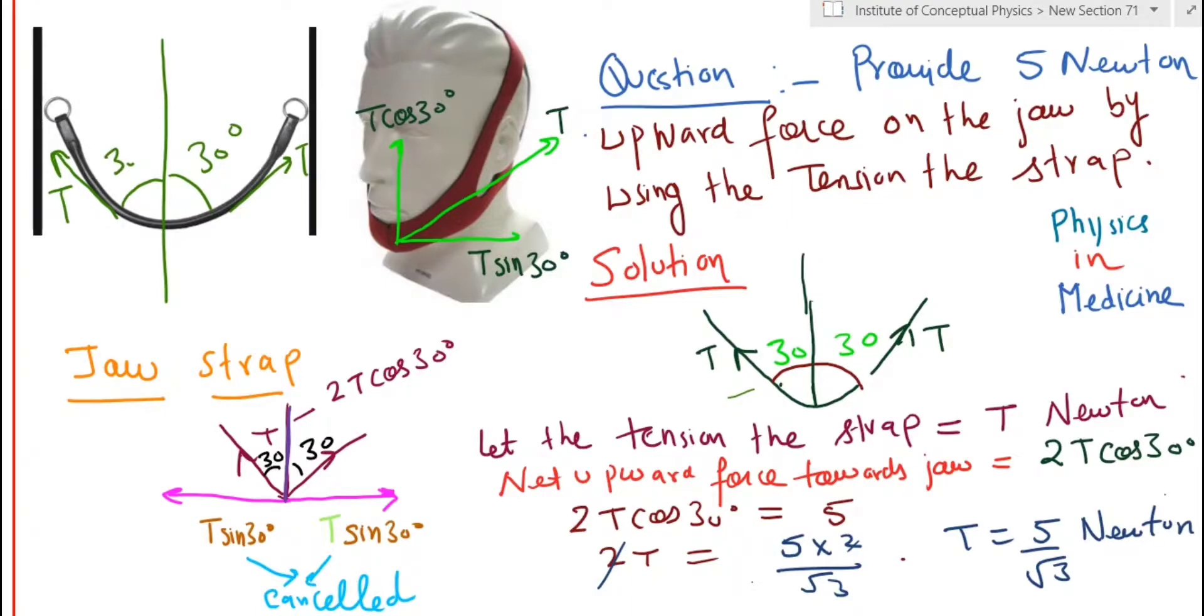So this is an example where the jaw is broken and we are wearing a strap. The strap has tension inside it. We know the angle. We will solve this problem of providing upward force of five Newtons in the next video.